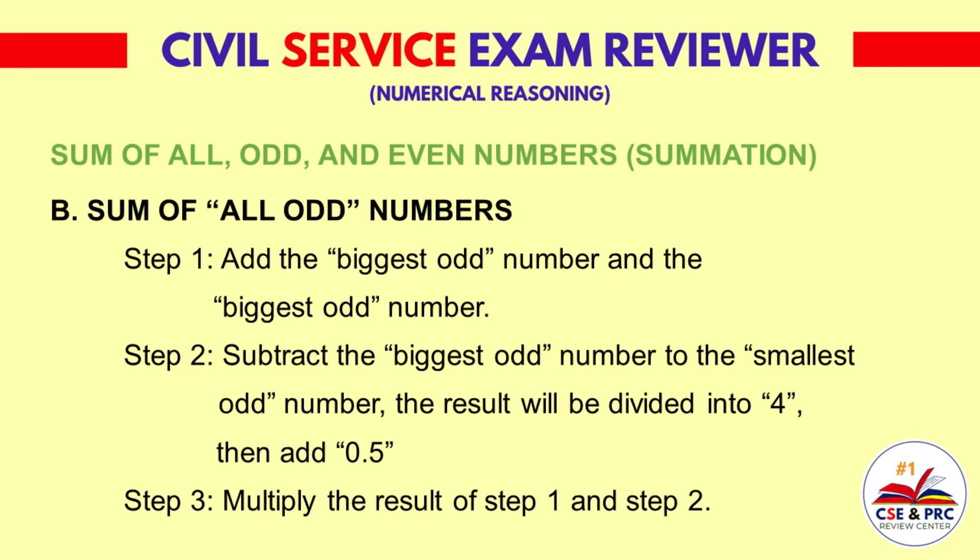B. Sum of All Odd Numbers. Step 1: Add the biggest odd number and the smallest odd number. Step 2: Subtract the biggest odd number from the smallest odd number, divide the result by 4, then add 0.5. Step 3: Multiply the result of Step 1 and Step 2.